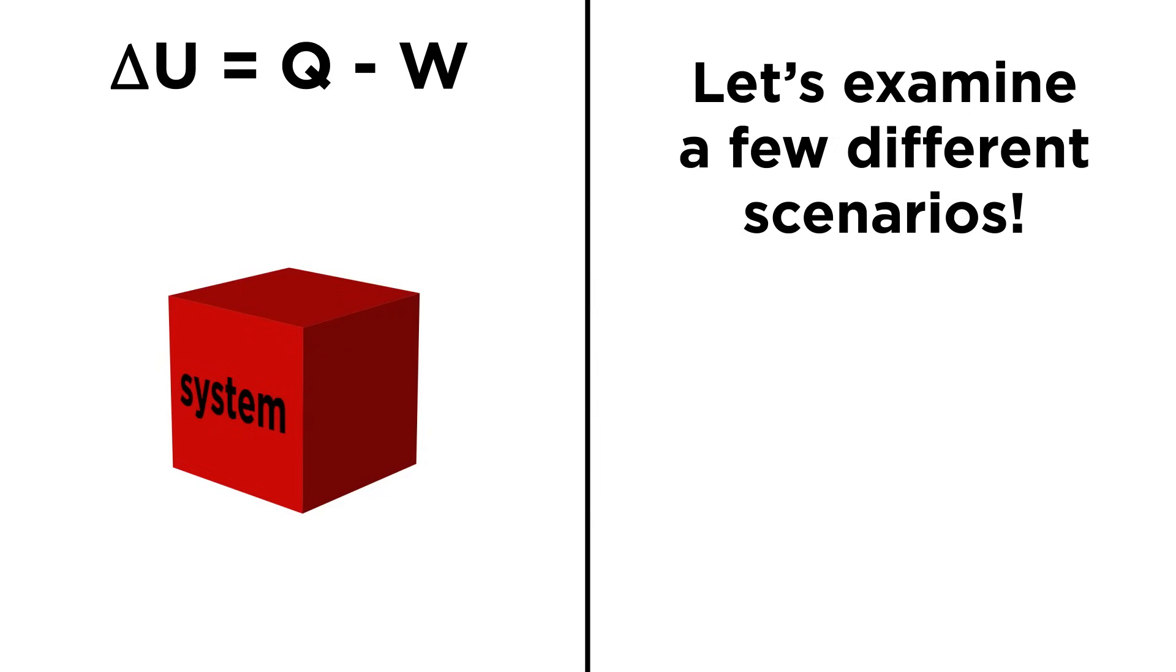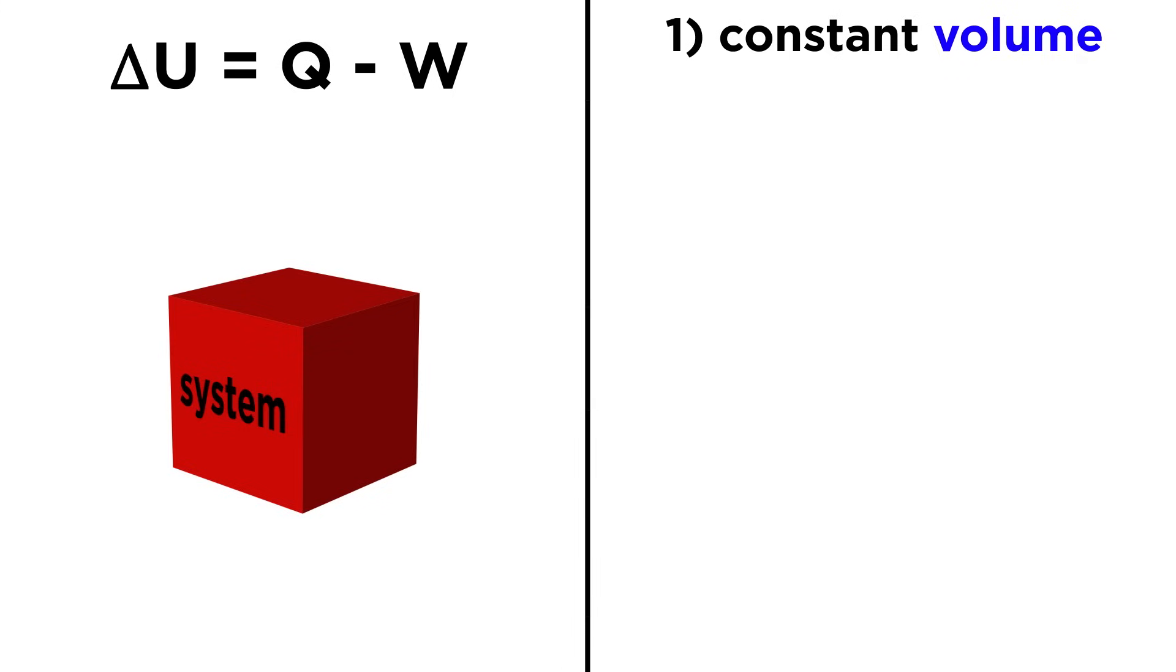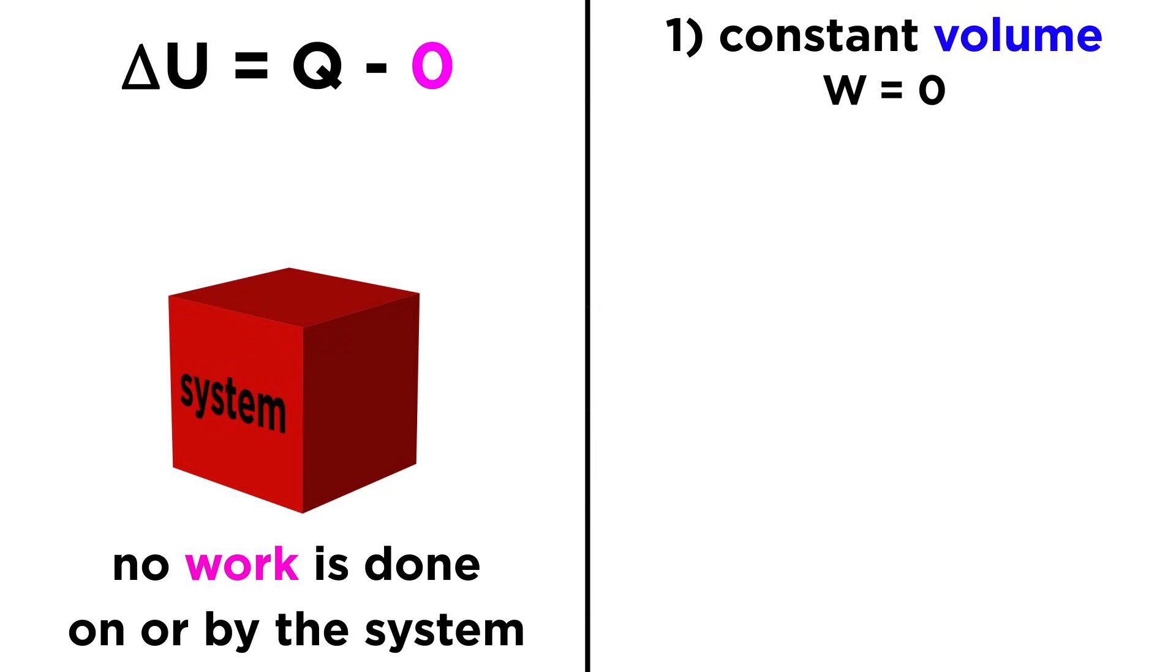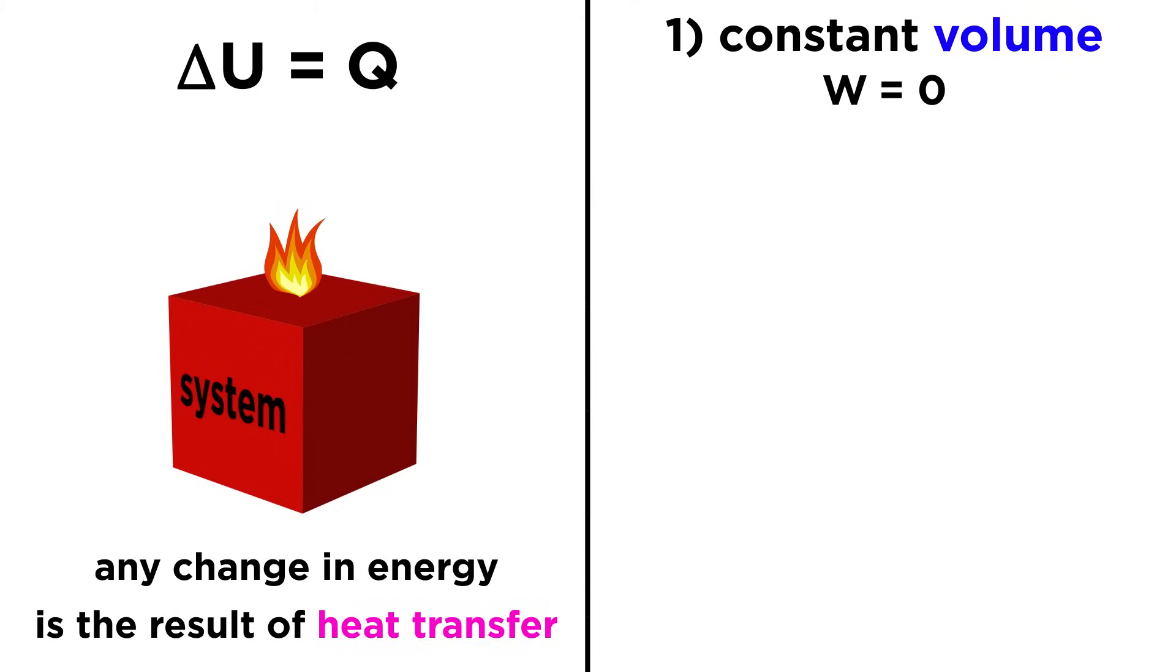Because of this law, we can outline a few different types of processes that can occur. If a process occurs where there is no change in volume for the system, that means that no pressure volume work can be done on or by the system, so work is zero. In such a case delta U equals Q, and any change in internal energy must be the result of heat transfer in or out. This will be called an isovolumetric process, meaning no change in volume.